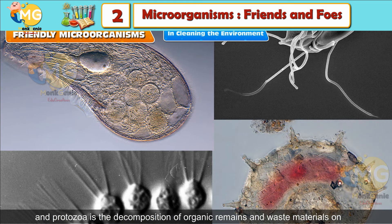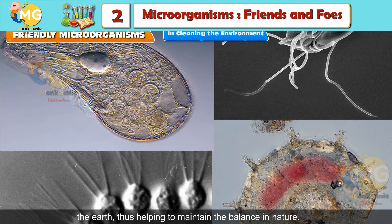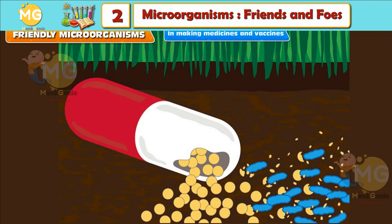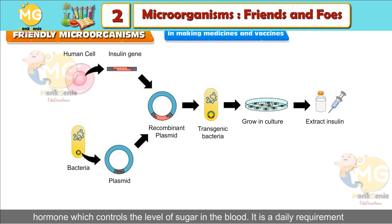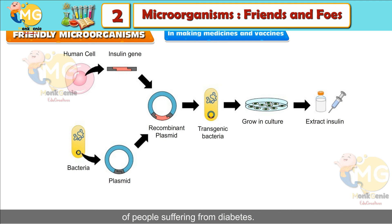In cleaning the environment: The most significant role played by microorganisms such as bacteria, fungi and protozoa is the decomposition of organic remains and waste materials on the earth, thus helping to maintain the balance in nature. In making medicines and vaccines: Certain types of bacteria are used to produce insulin, a hormone which controls the level of sugar in the blood. It is a daily requirement of people suffering from diabetes.